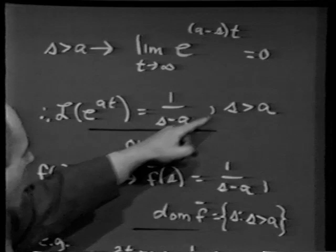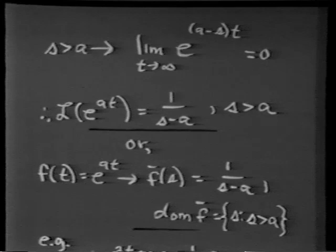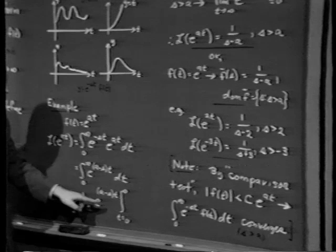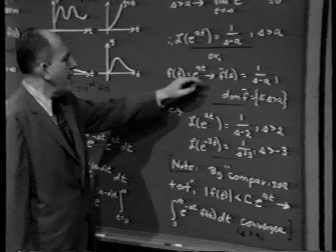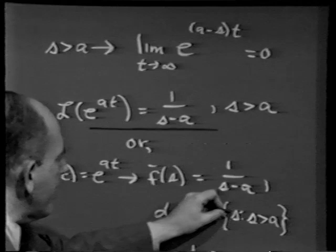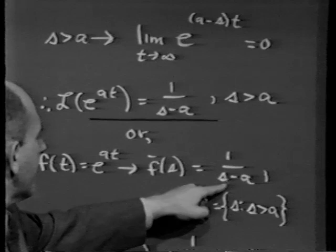By the comparison test — the same one used for infinite series — if the magnitude of f of t is less than some constant c times e to the at for all t, then the integral from 0 to infinity of e to the minus st f of t dt must also converge. Because we know the integral converges when the integrand involves e to the at, multiplying by a constant doesn't affect convergence. So if the integrand we're investigating is smaller in magnitude, it must also have a Laplace transform.